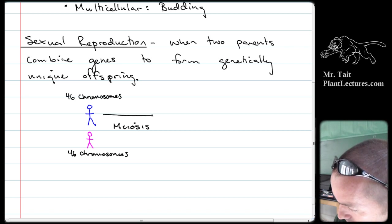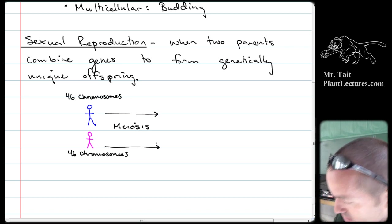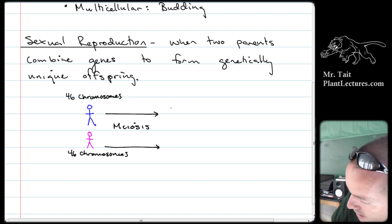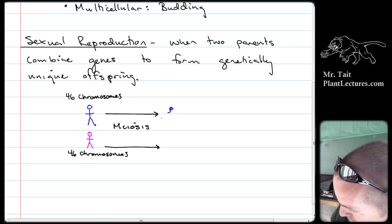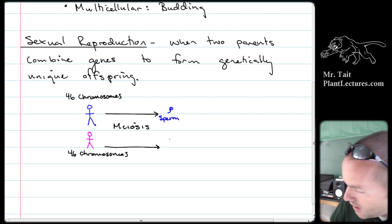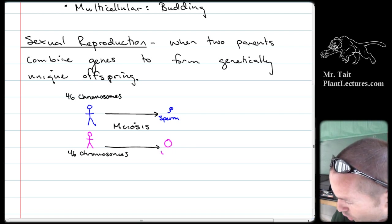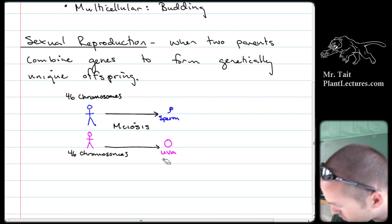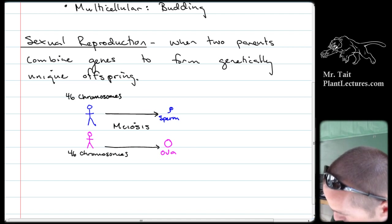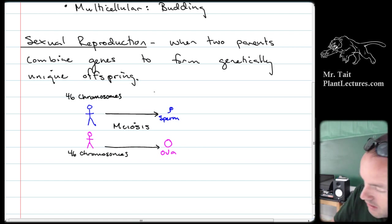The cells with 23 chromosomes are called sperm cells in males. In females, they're commonly called eggs, but the actual term is ova. Sperm and ova each have 23 chromosomes.